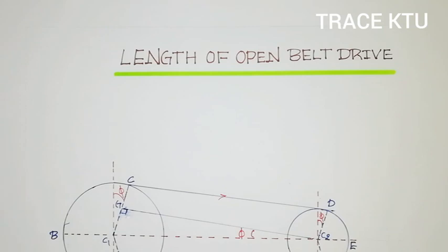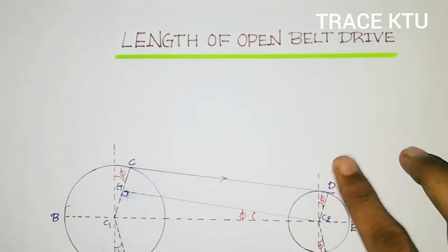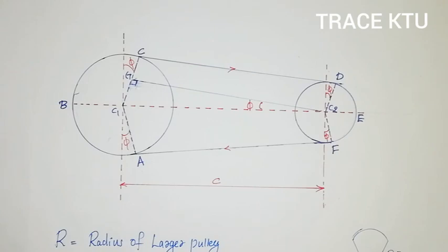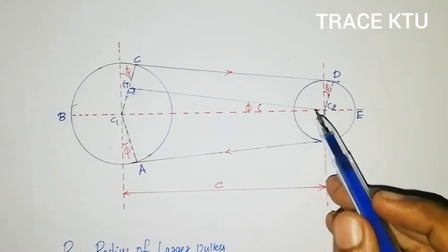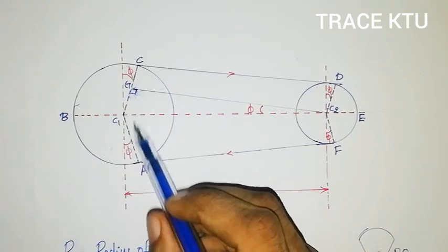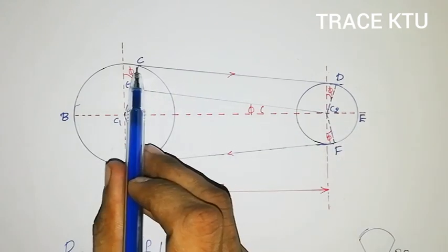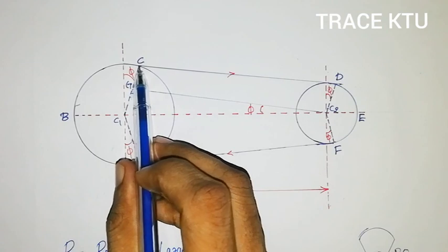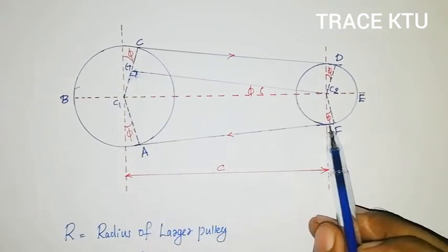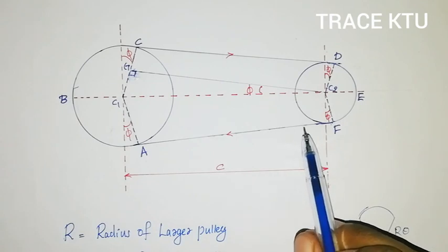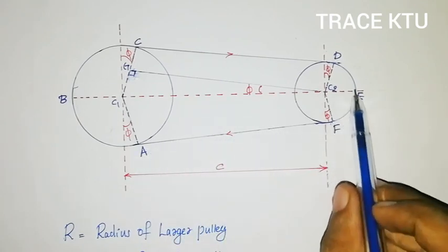Now we're going to discuss the derivation. Looking at the figure for the open belt drive: this is the driver, which is the smaller pulley, and this is the driven, which is the larger pulley. We can see the belt and the tangent lines connecting the two pulleys.